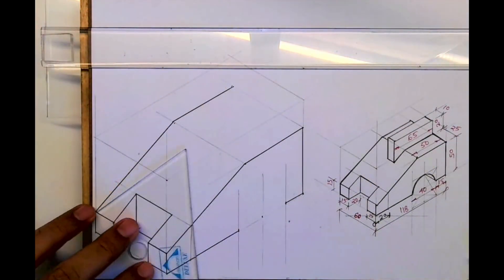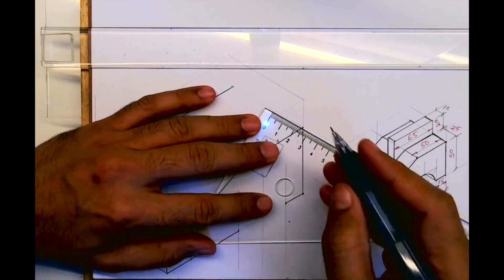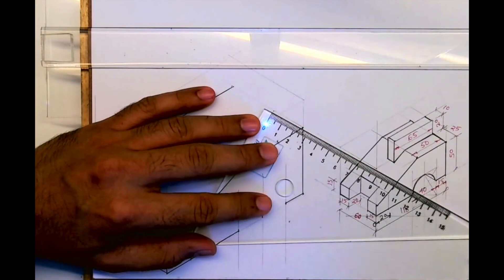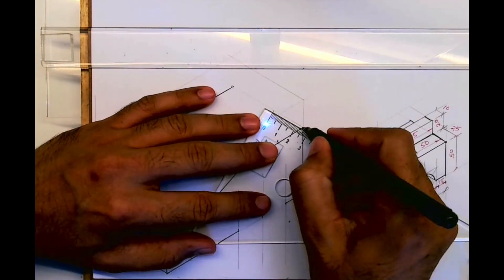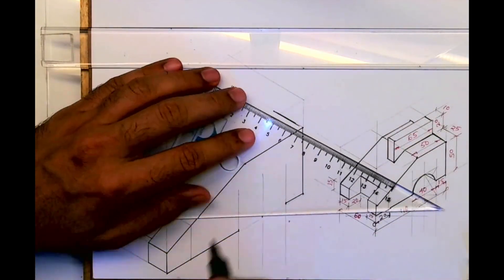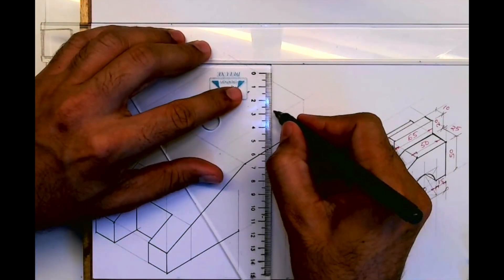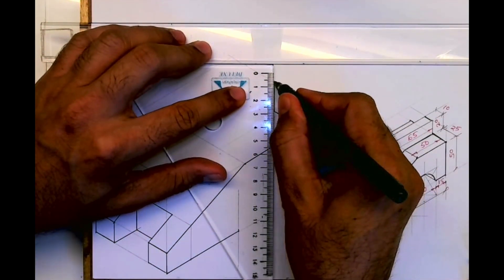Now we'll draw this part. How much you have to go inside? 25. Then from there you go up by 20. You take 25 like this.